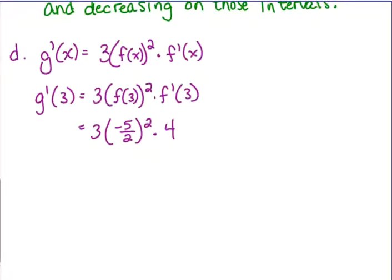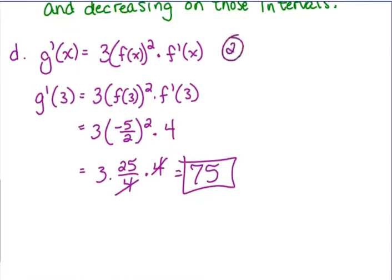Oh, and looky there how they set up this problem. When you square negative 5 over 2, that gives you 25 over 4. And they even gave you a 4 to cancel with that. So it equals 75. You get two points for your derivative, one point for your answer.